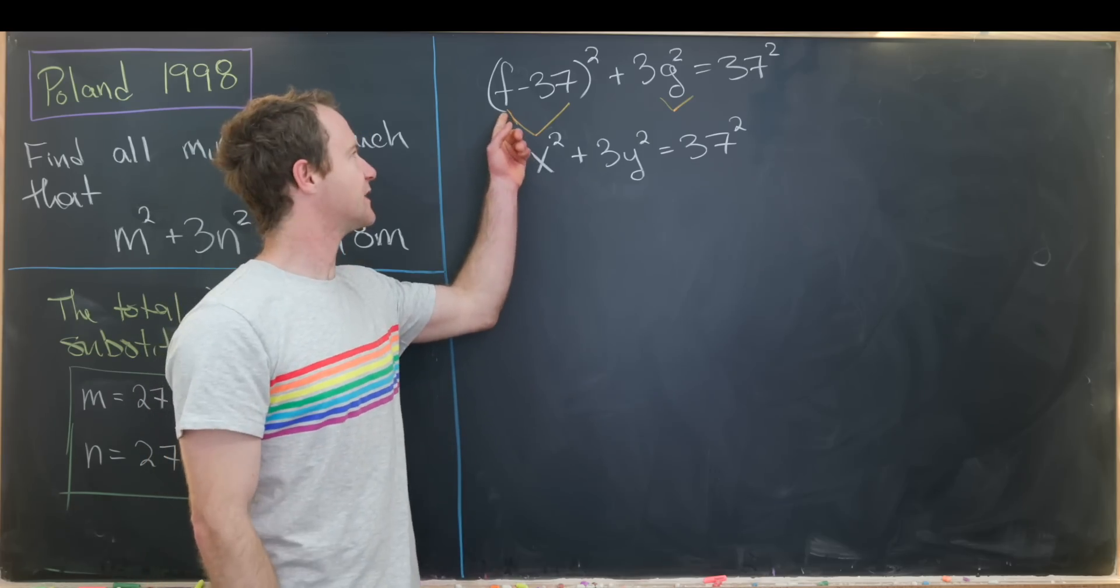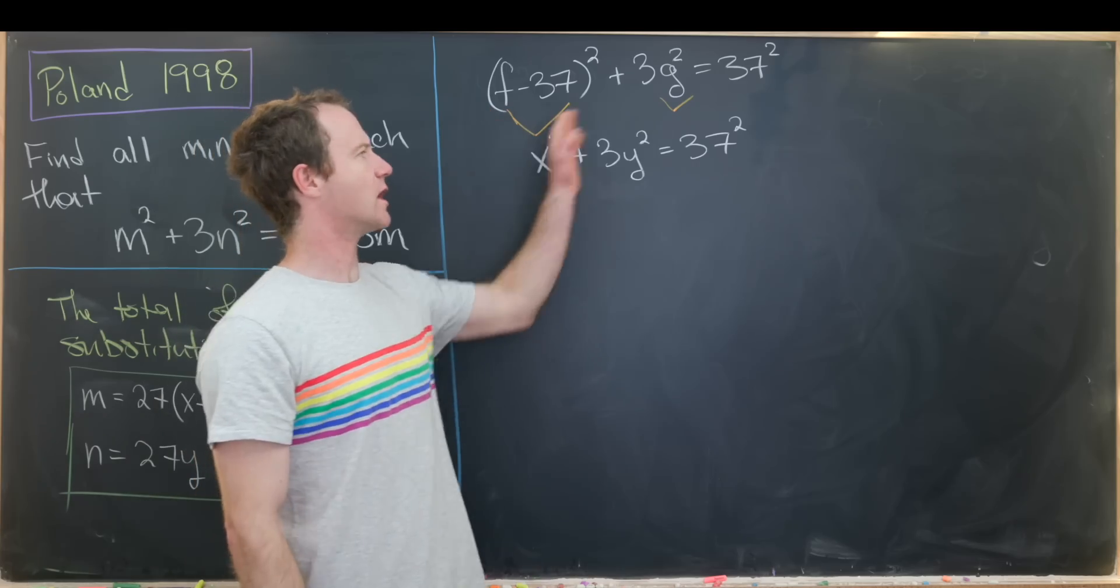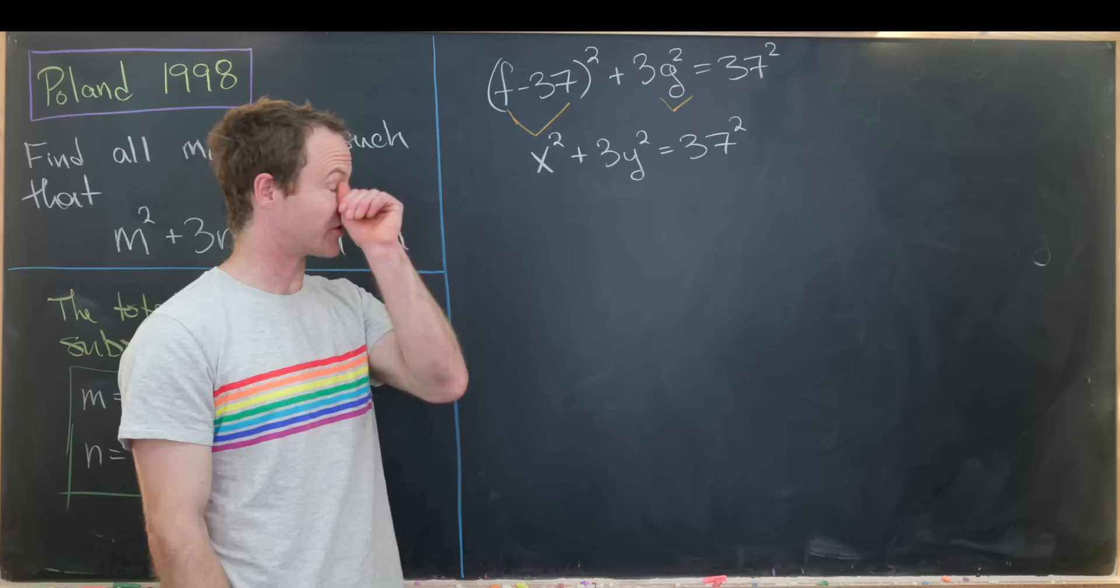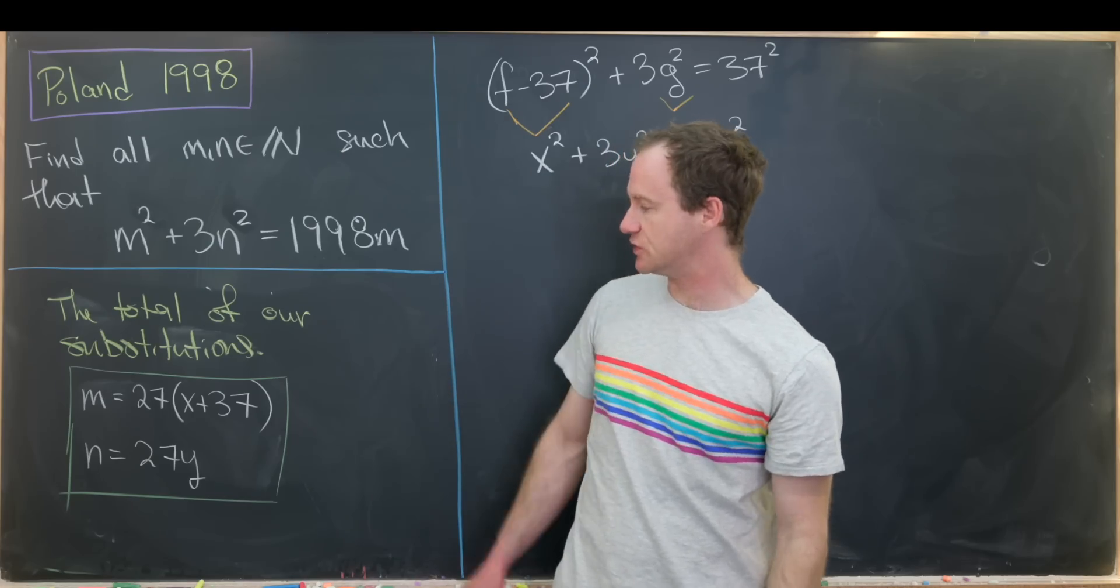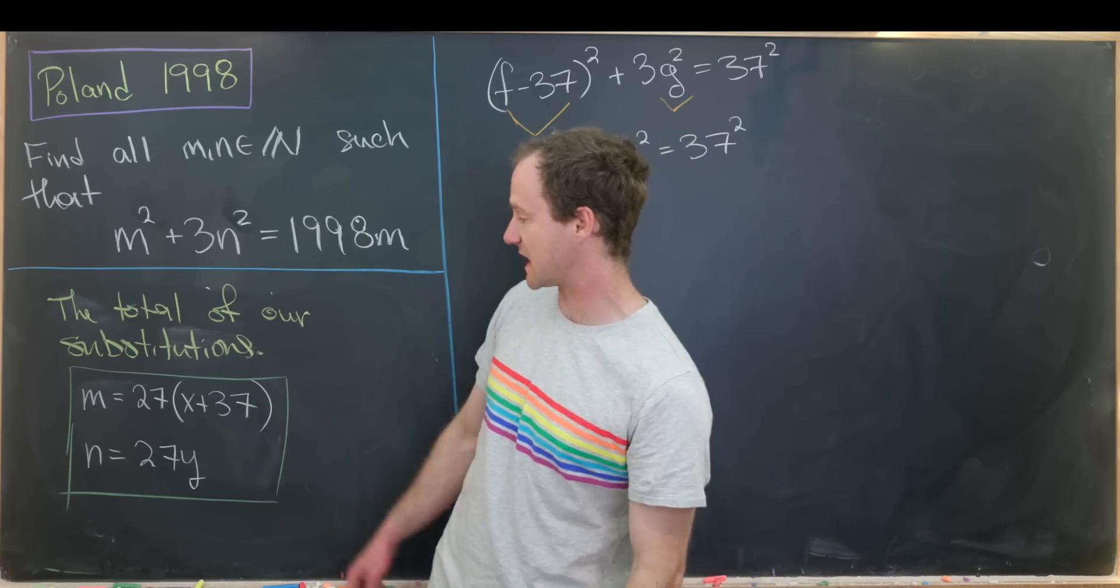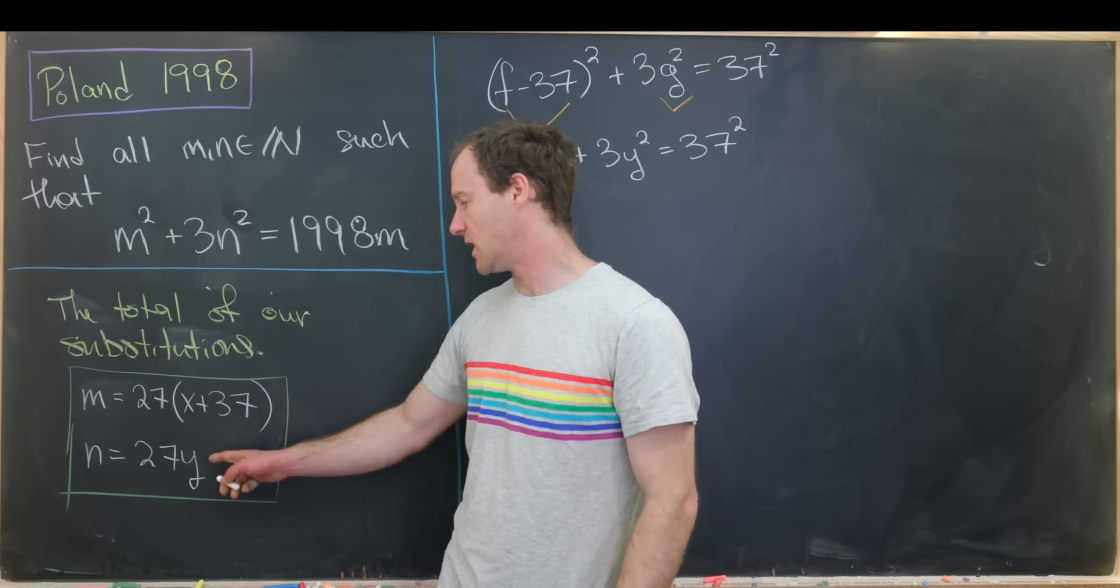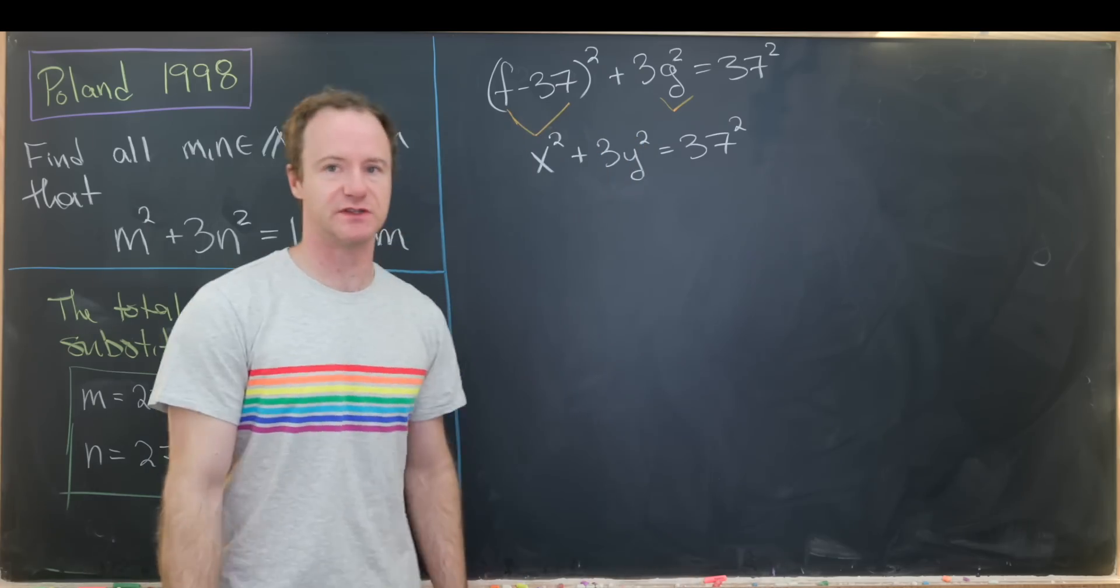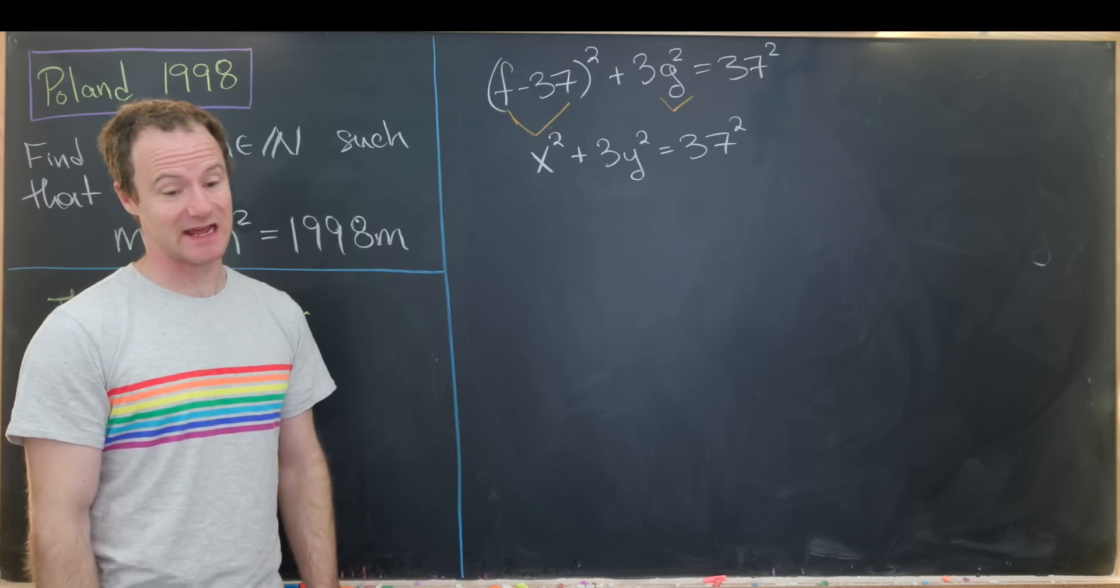So the last board we ended with the equation f minus 37 squared plus 3g squared equals 37 squared. Now I'd like to do one little transformation of that into x squared plus 3y squared equals 37 squared. And then we have a summary of our substitutions from our original variable m and n back to our final variables x and y. So we have m is 27x plus 37 and then n is 27 times y. And that's pretty clear from all of the substitutions that we did before.